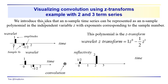What we're going to do here is introduce another approach — the Z-transform approach to convolution. We have a simple example: a two-sample wavelet with amplitudes of one and minus one-half at times t equals zero and t equals one. The sample rate could be 0.002 seconds, or two milliseconds, so this could be 0.002 seconds and this could be 0.004 seconds, or four milliseconds.